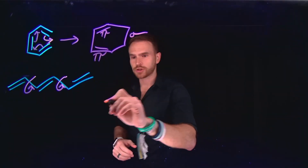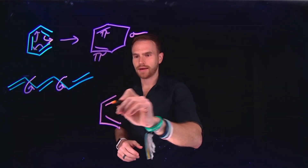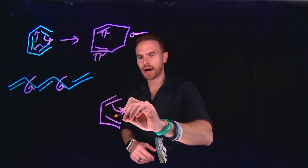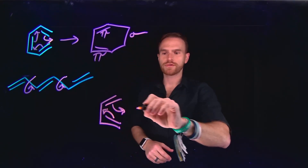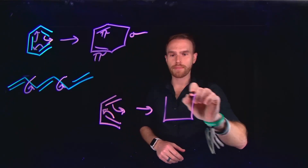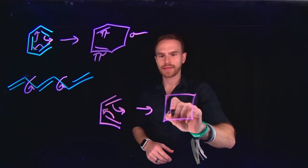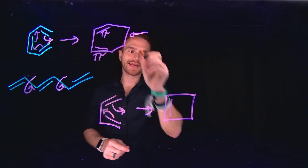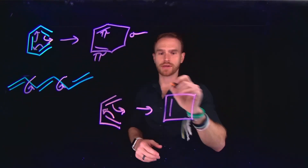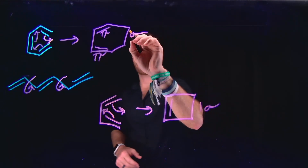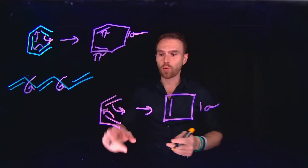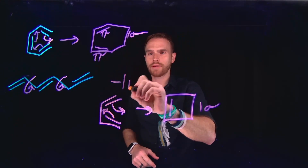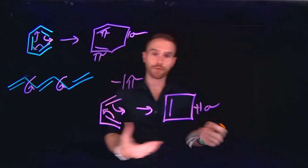The same thing would be true if we had a structure where these pi electrons can move to form a brand new four-membered ring that contains one pi bond. Notice that overall we are gaining a sigma bond in each of these — one sigma bond is being formed, and we are losing one of the initial pi bonds. So minus one for the pi bonds, plus one for the sigma bonds.